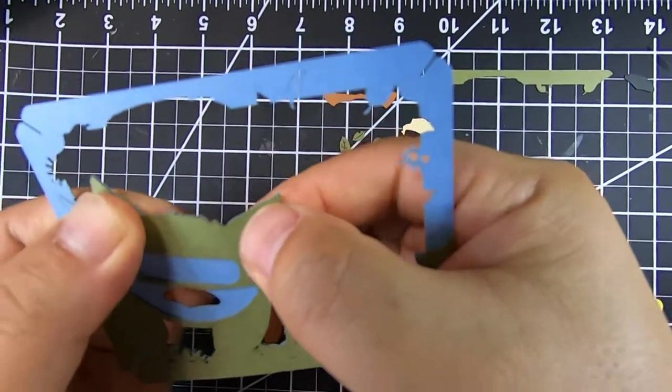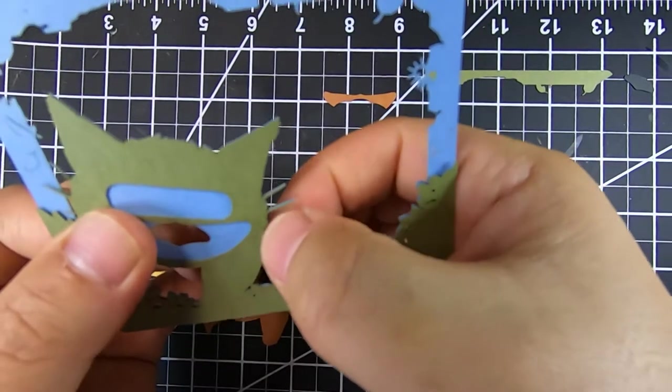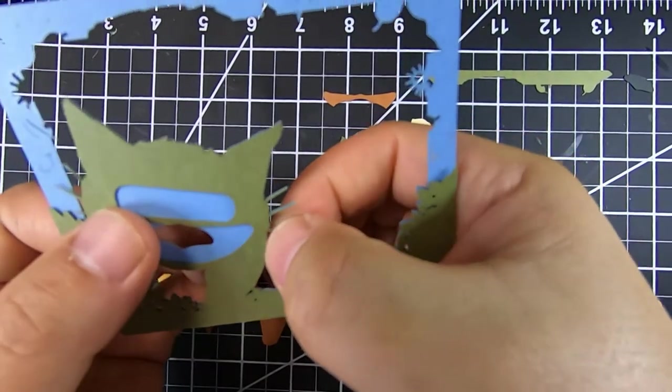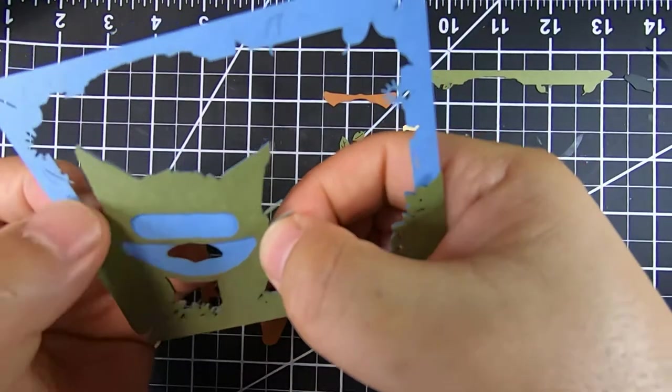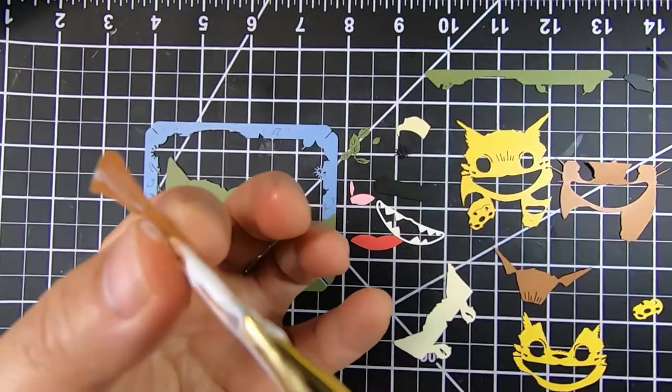I know I don't really get a lot of views for these paper theater models but I actually enjoy making them and they're pretty quick. They're usually about a two hour build, sometimes one and a half hours.